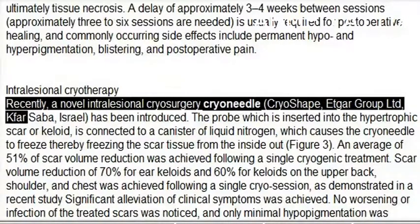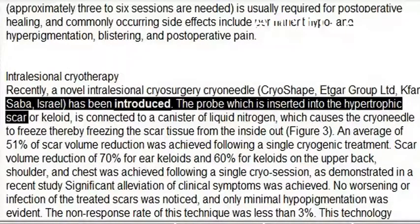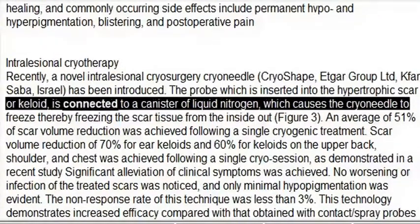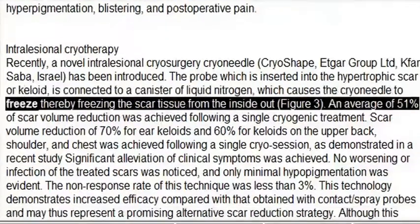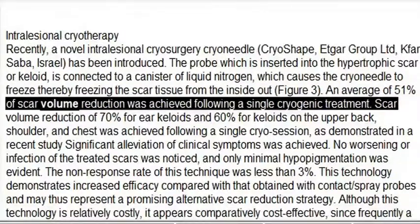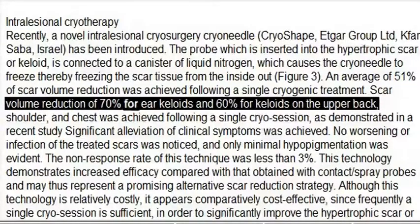Intralesional cryotherapy: a novel intralesional cryosurgery device (Cryoneedle Cryoshape, ETGAR Group LTD, K.F.R. Saba, Israel) has been introduced. The probe, which is inserted into the hypertrophic scar or keloid, is connected to a canister of liquid nitrogen, which causes the cryoneedle to freeze, thereby freezing the scar tissue from the inside out (Figure 3). An average of 51% scar volume reduction was achieved following a single cryogenic treatment, with scar volume reduction of 70% for ear keloids.